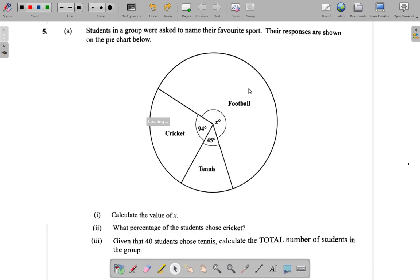Part 3 of this question. It says, given that 40 students chose tennis, calculate the total number of students in the group.